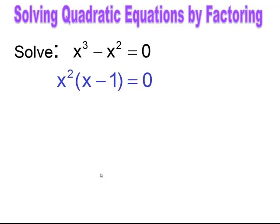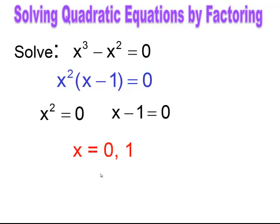I factor here using the GCF since there's no constant. I set each factor equal to zero. If x squared equals zero, then x must equal zero. When I solve x minus 1 equals zero, I get x equals positive 1. So my solutions are x equals 0 and x equals positive 1.